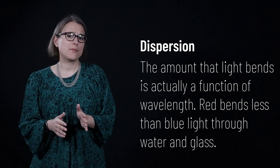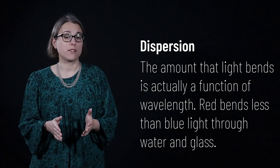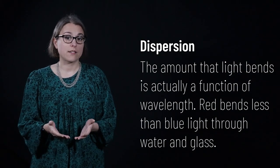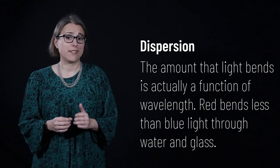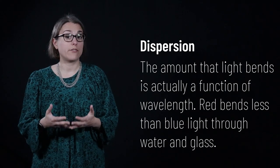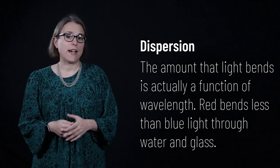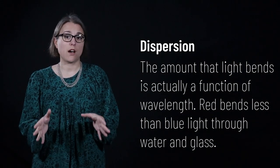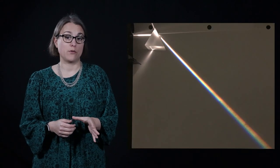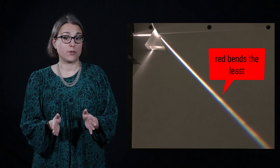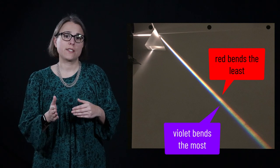Although Snell's law seems to indicate that the amount of bending is independent of wavelength, in fact different wavelengths of light will bend more or less through different media. The index of refraction of a material is not just a single number but is a function that varies based on the light wavelength. This fact can be used to split light into its constituent colors — a property known as dispersion. A prism splits white light into a rainbow due to dispersion, with each color bending different amounts: red bends the least through glass and violet the most. This also occurs in raindrops and is the physical cause of rainbows in the sky.